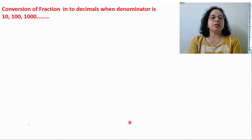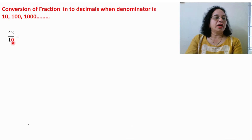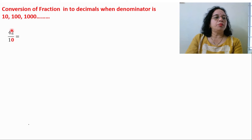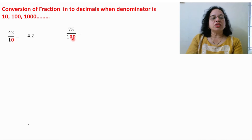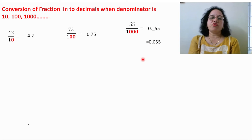Conversion of fraction into decimal when the denominator is 10, 100, or 1000. For 42 upon 10 — only one zero — so leave one digit and put the decimal. Answer is 4.2. With two zeros, leave two digits and put the decimal: 0.75. With three zeros, we need three places — one extra place is filled with 0. So the answer is 0.055.